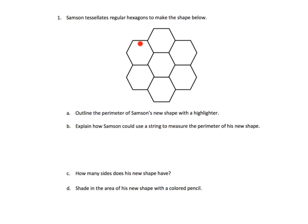It says Samson tessellates regular hexagons to make the shape below. Outline the perimeter — so we're going to outline the perimeter with a highlighter. There we go, I've outlined the perimeter. It also asks: how could we use a piece of string to measure the perimeter of this shape? We can take a string, lay it around the outside of this flower shape made of tessellating hexagons, and measure the length of the string — that would tell us the perimeter. How many sides does this new shape have? You're going to have to do some serious counting to figure that out.